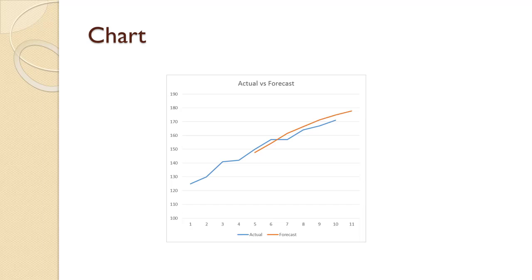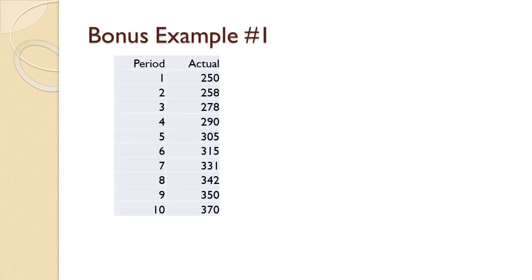The slide shows a chart of the results. Notice how closely the trend-adjusted forecast tracks the actual data. In most of these tutorials, I give you two examples on how to work the problem. Because this technique can be difficult, I will be giving you two bonus examples for a total of four. The solutions to these two examples will be shown on the slide but will not be narrated. Also note that these will use a different set of data than the prior problems.